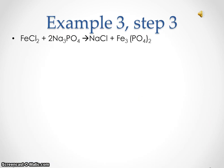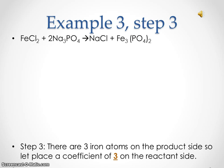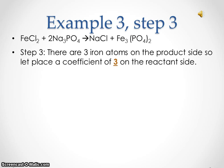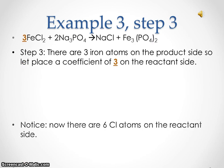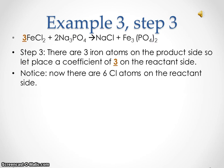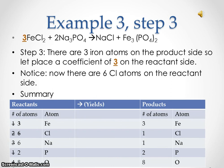Example three, step three. After placing a coefficient of two on the reactant side, there are three iron atoms on the product side. Place a coefficient of three on the reactant side. Notice there are now six chlorine atoms on the reactant side. On the reactant side, we now have three iron atoms, six chlorine atoms, six sodium atoms, two phosphorus atoms, and eight oxygen atoms. On the product side, we have three iron atoms, one chlorine atom, one sodium atom, two phosphorus atoms, and eight oxygen atoms.